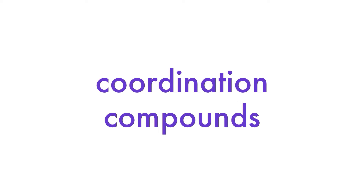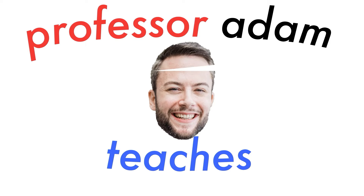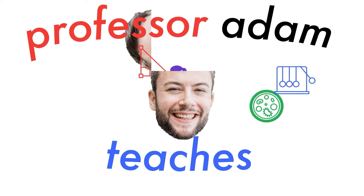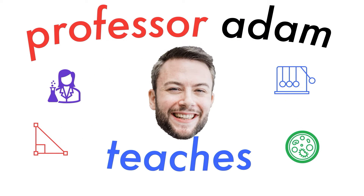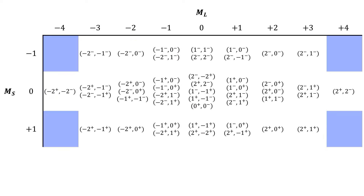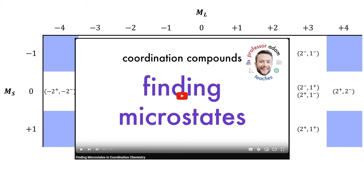Hi, it's Professor Adam. Let's talk about generating atomic states and term symbols from the microstates of a multi-electron free ion. In a previous video, we discussed how to generate the microstates for a free multi-electron ion. Now it is time to see how we can determine the atomic states and term symbols for these microstates.